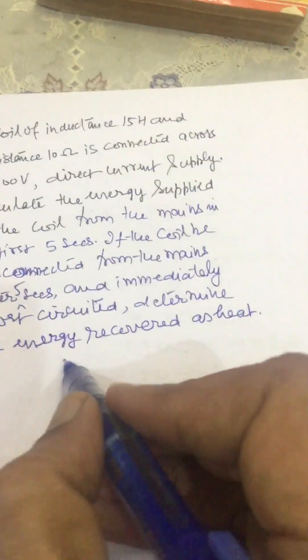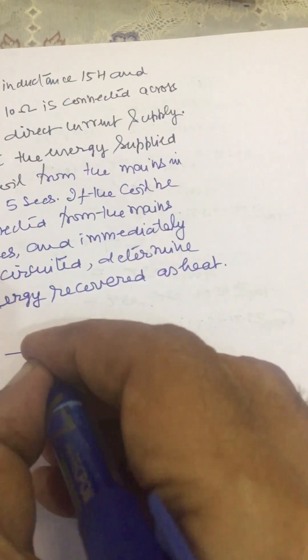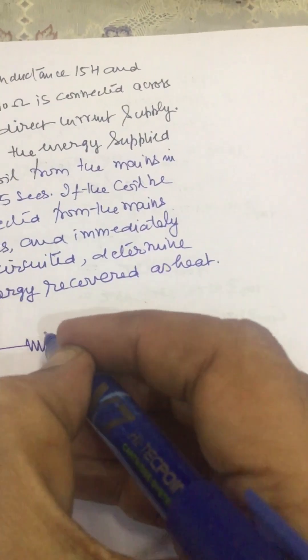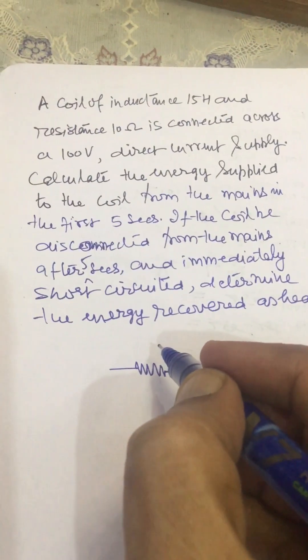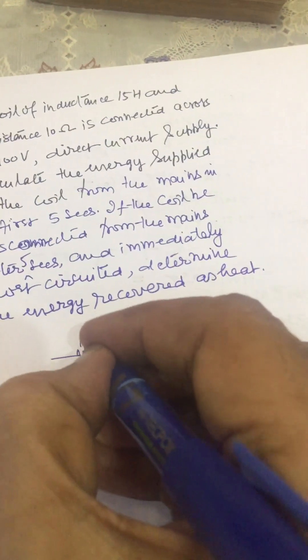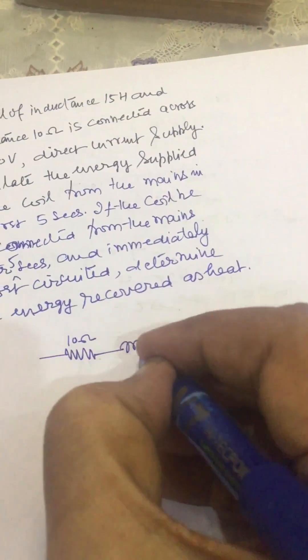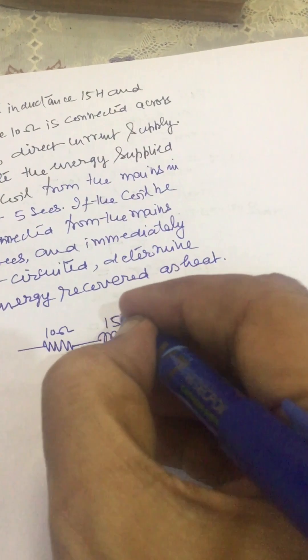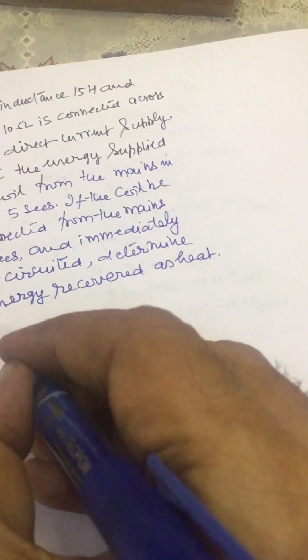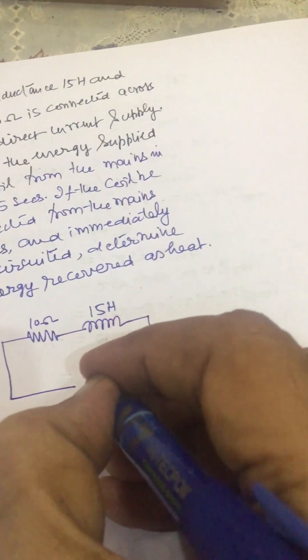For solving this problem we draw the following circuit. This is your 10 ohm resistance and inductance is 15 Henry. This is connected to 100 volt supply.